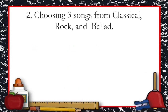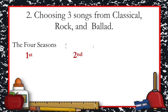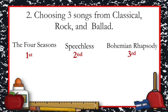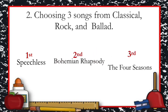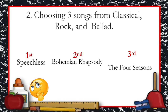Choosing three songs for classical, rock, and ballad — does it illustrate permutation or combination? For example, the first song is The Four Seasons, the second is Speechless, and the third is Bohemian Rhapsody. If we interchange their positions, it is not different from the first selection. The order is not important, therefore it illustrates a combination.